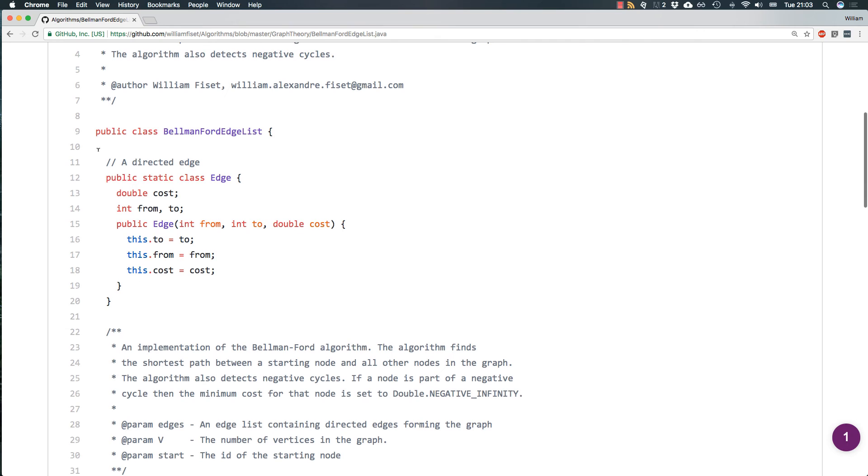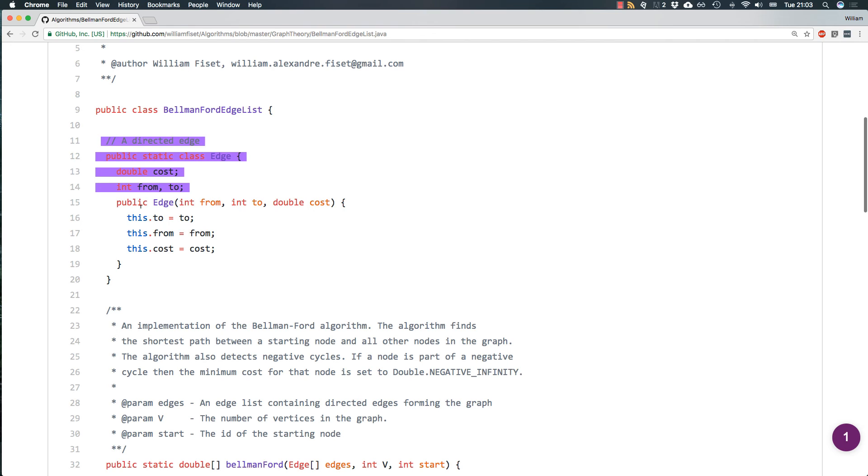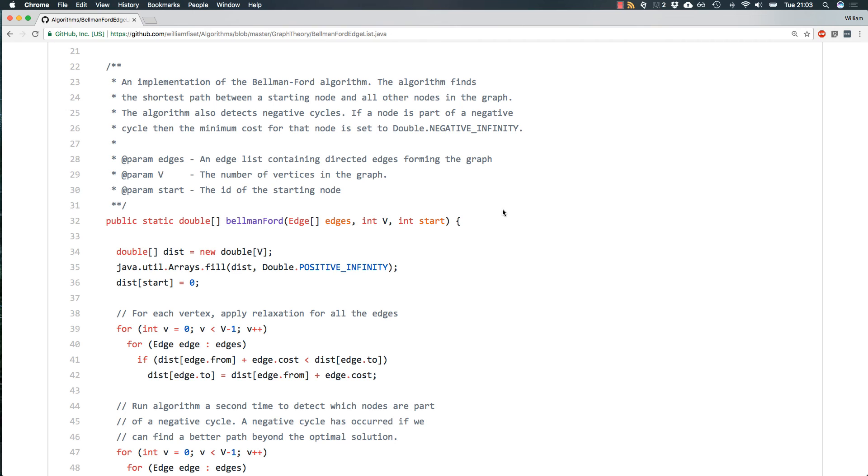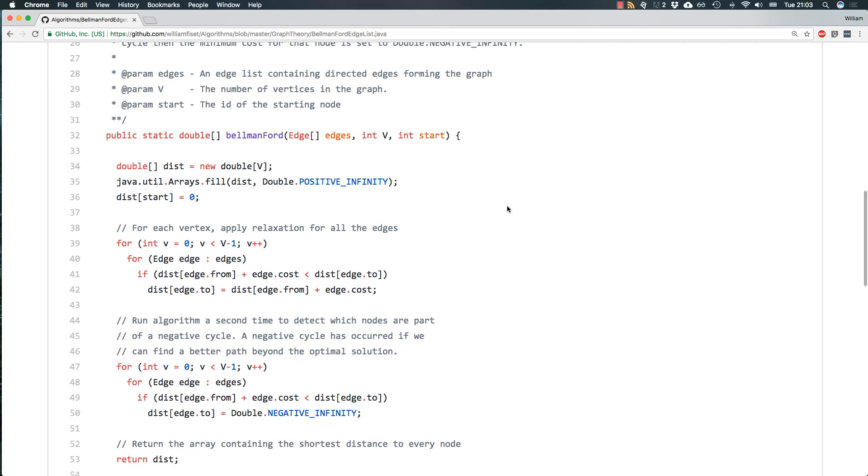So in the edge list implementation, first thing I do is I define a directed edge. And a directed edge simply consists of an edge that goes from a node to a node with a certain cost. Next, let's have a look at the actual algorithm itself. So for Bellman-Ford, what we need is a graph. So since this is an edge list, we just pass in all the edges. I'll also need the number of vertices in the graph and some starting node. And what we're returning is that distance array.